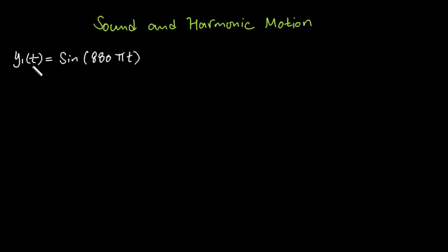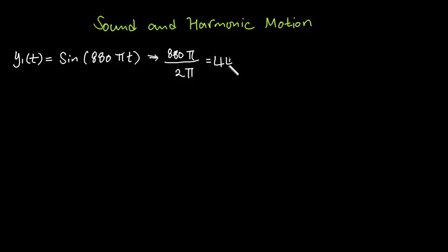The first function we're going to consider is y1(t) = sine of 880πt. The frequency of this function is given by 880π divided by 2π, which gives 440. This 440 is the number I see every day on my electronic tuner — it's the musical note A, corresponding to 440 Hz, meaning it vibrates 440 times per second.